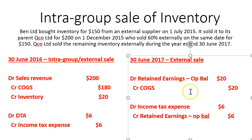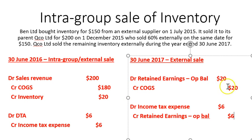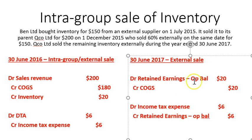For 2018, we don't need any entries. The reason is that the COGS will turn into retained earnings opening balance and the income tax expense will also turn into retained earnings opening balance, so they will perfectly offset each other to zero. We won't need to recognise any entries in subsequent years going forward.